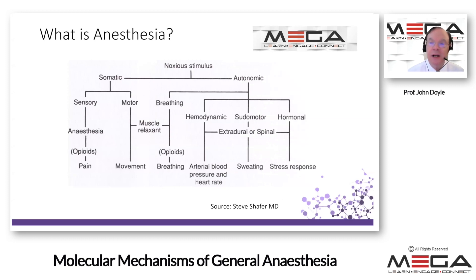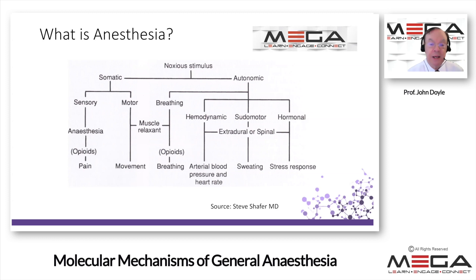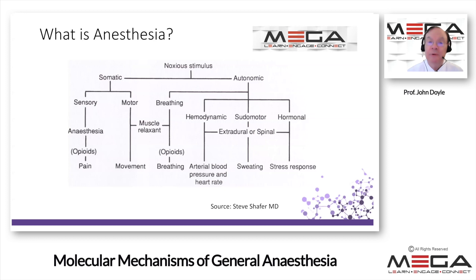One question is: what is anesthesia? The response to noxious stimuli can be somatic or autonomic. If it's somatic, it could be sensory or motor — the motor response we're familiar with is movement, and we want an immobile patient for surgery. In the case of autonomic responses, we can have hemodynamic and humoral effects. The stress response to surgical stimuli is very important as we're now looking at ways of decreasing the inflammatory response during surgical procedures.